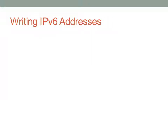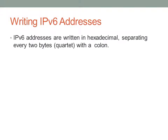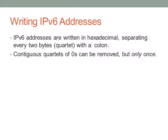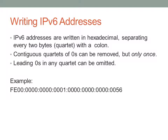IPv6 addresses are very long — 128 bits — so we have to abbreviate them. IPv6 addresses are written in hex, separating every two bytes with a colon. Contiguous quartets of zeros can be removed, but you can only remove one group of them; otherwise we're not sure how many zeros are in which place. Any leading zeros in any quartet can also be omitted — they're assumed to be there since you have to have a certain number.